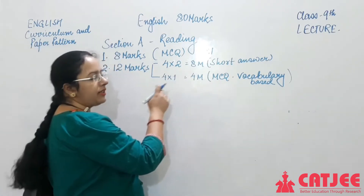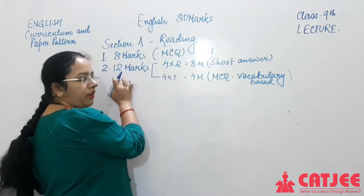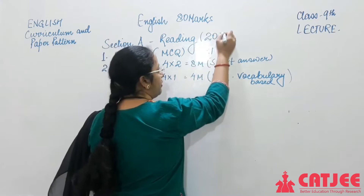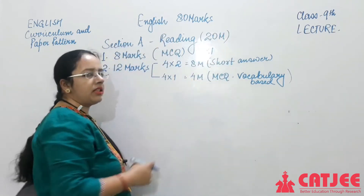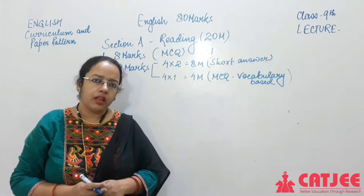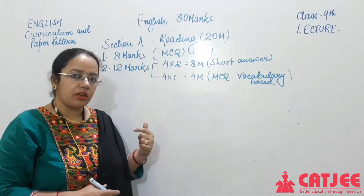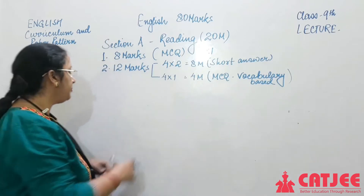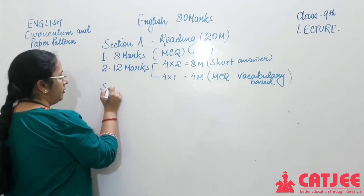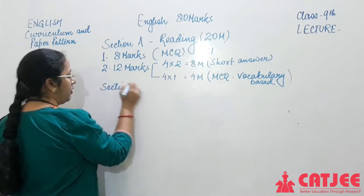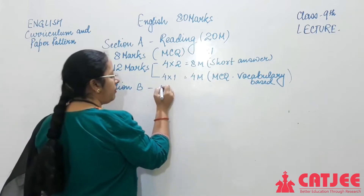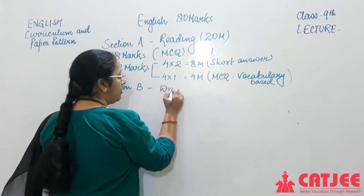So altogether the reading section is 12 plus 8, that is 20 marks. Out of 80 marks, 20 marks is the unseen passage reading section. Now we move to the next section — Section B.